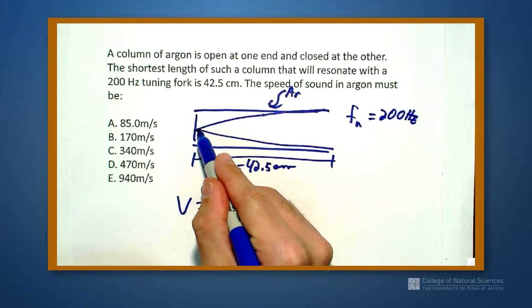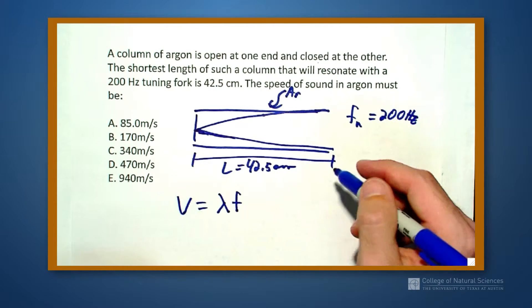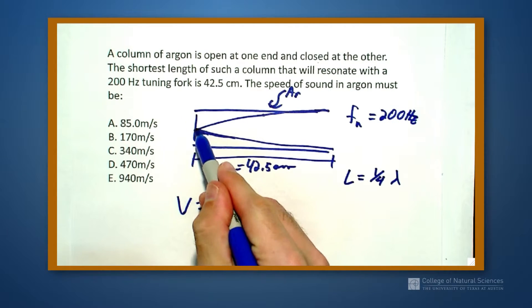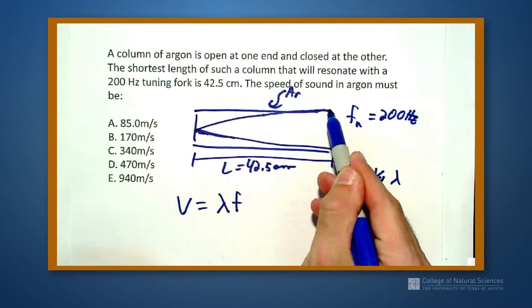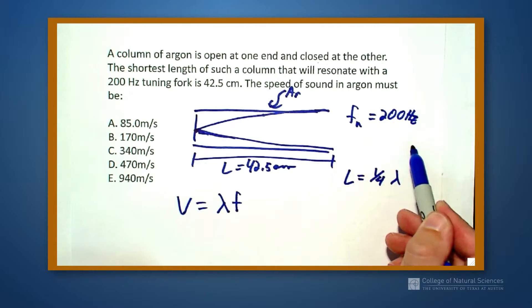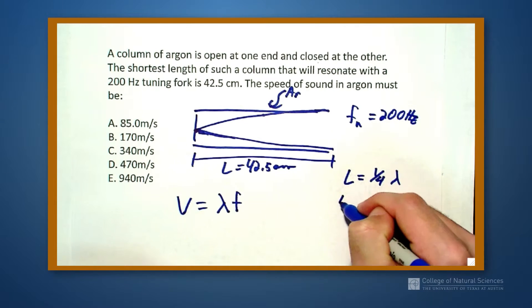Well, I see that this tube right here, this length is equal to a quarter of the wavelength. I go from a node to an anti-node, so I'm a quarter of the way through. I have to go node, anti-node, node, anti-node and back up. So this is a quarter wavelength, which means 4 times L is going to be equal to my wavelength.